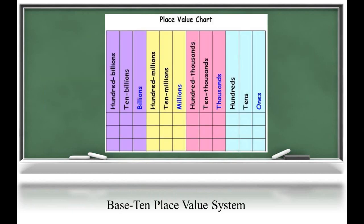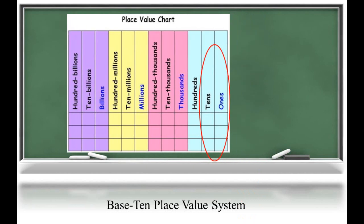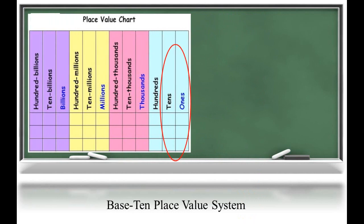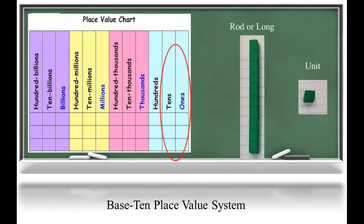Strong understanding of our base 10 place value system supports the math learner across the four basic operations. To build this understanding, the first place value unit focuses solely on ones and tens. Most frequently, during place value lessons, students will use tools called base 10 manipulatives. Second graders use the unit cube to represent the ones, and the long, or rod, to represent the tens.